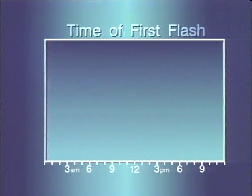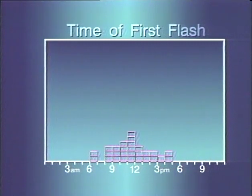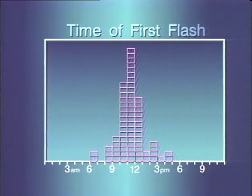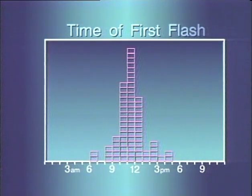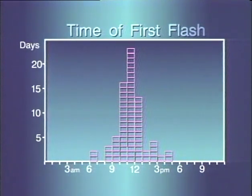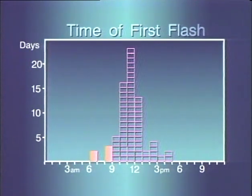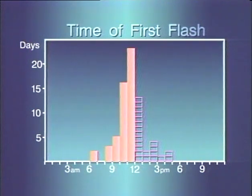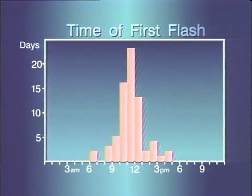To simplify the task, Lopez counted how many first flashes fell in each hour of the day. Because the data was stored in a computer, the computer did the counting. Now we can draw a histogram to display the distribution. The horizontal scale is marked off in hours. The vertical scale is the number of days in which the first flash occurred at a given time. Each bar represents one hour of the day, and the height of the bar is the number of days in which the first flash fell in that hour.